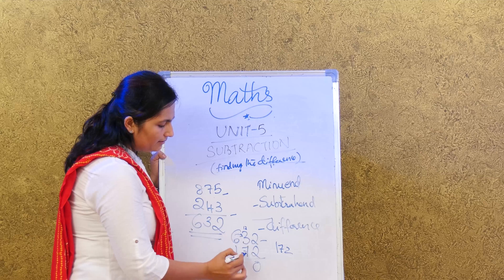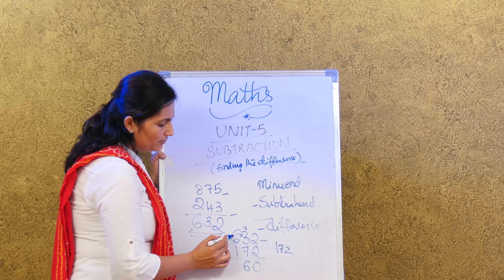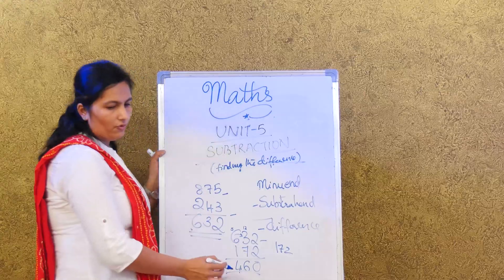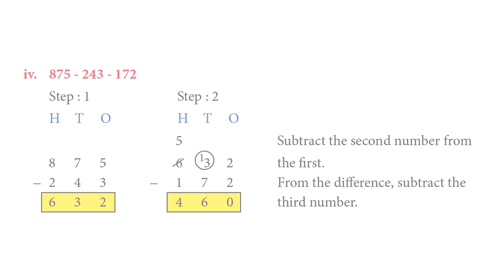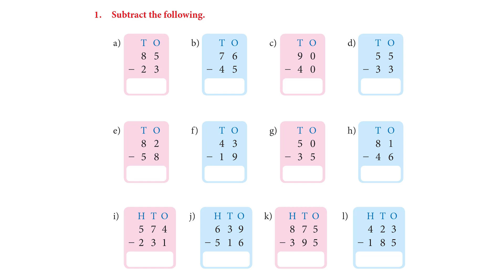We take 1 from here, so it becomes 13. 13 minus 7 is 6. Since we took 1 from here, this becomes 5. So 5 minus 1 is 4. We got the answer 460. Now go ahead and do the practice subtraction sums in page number 87.